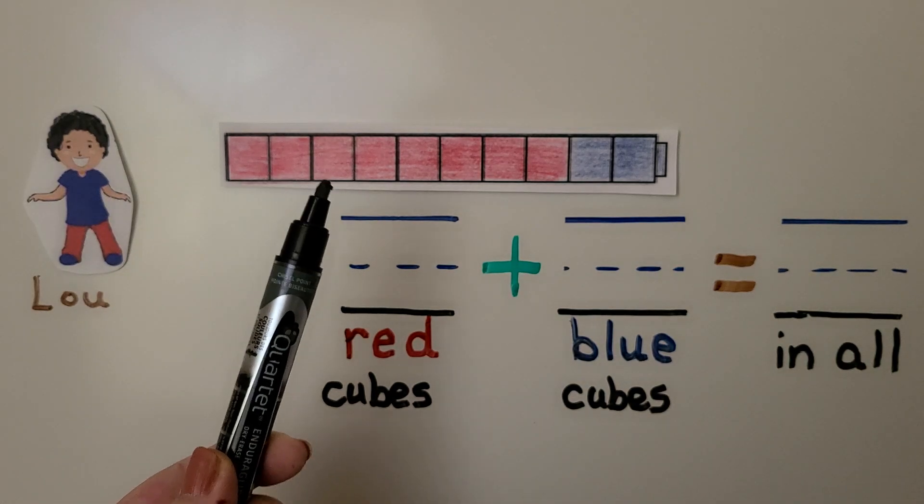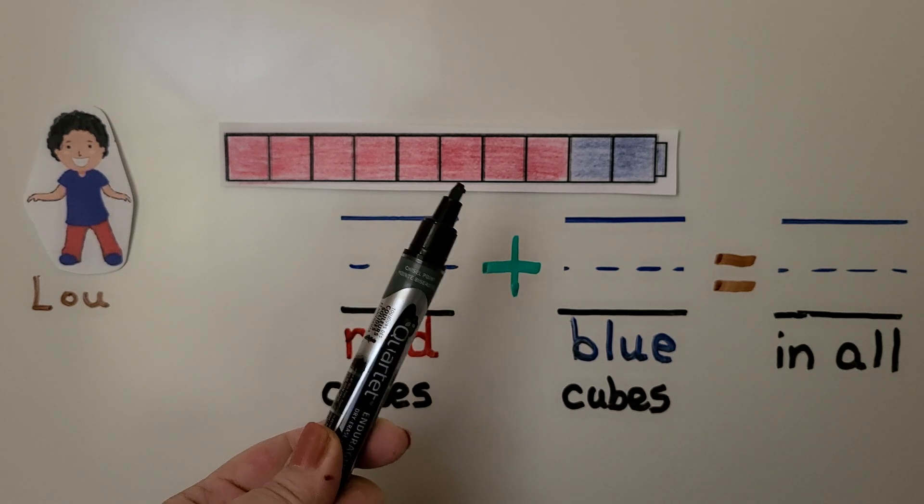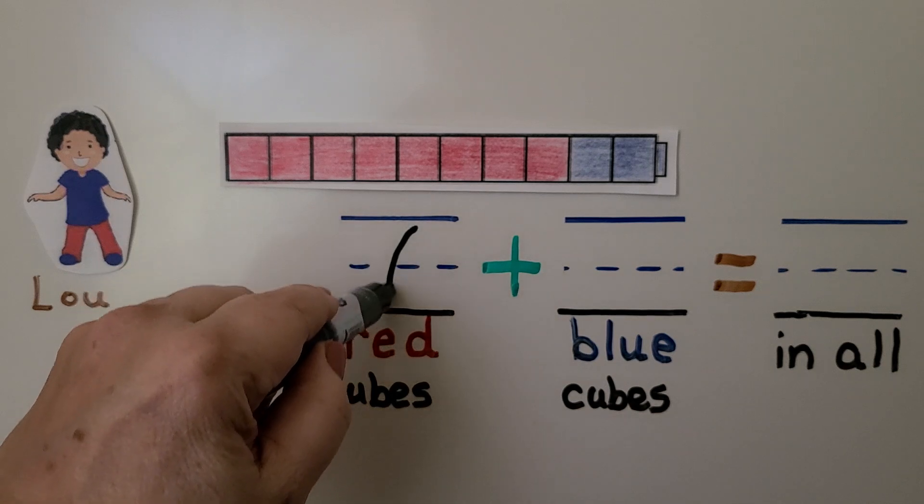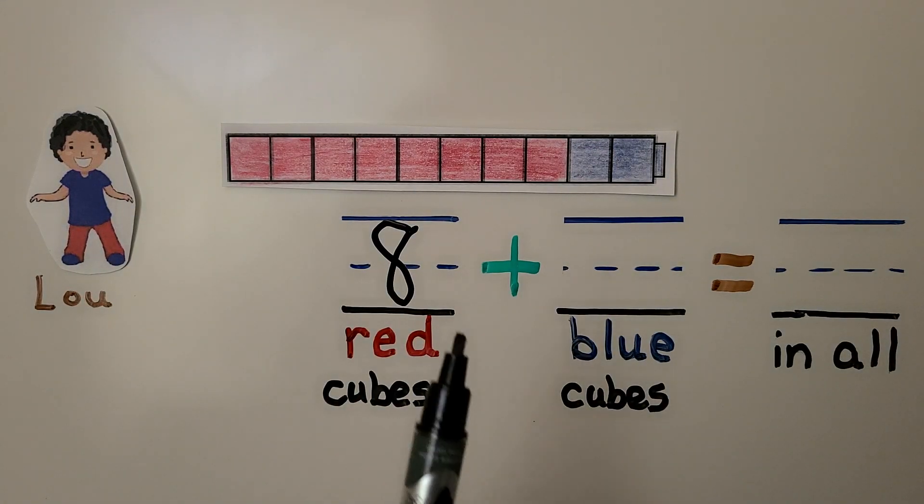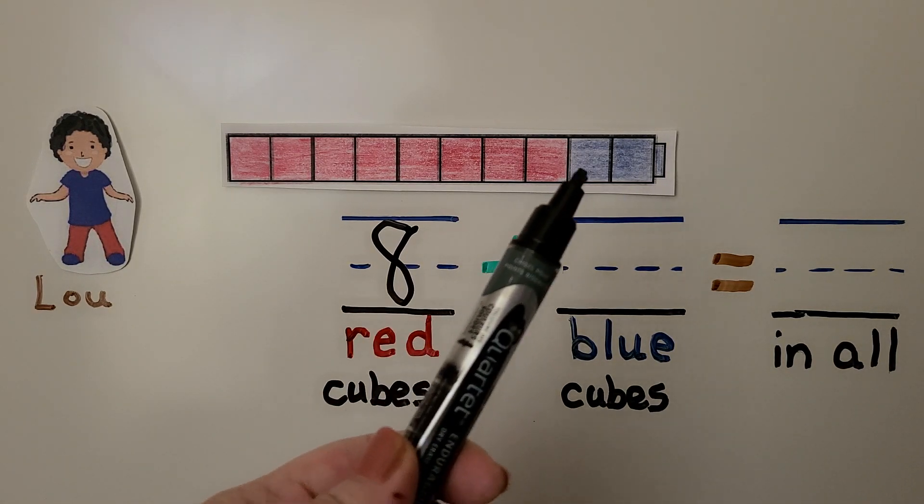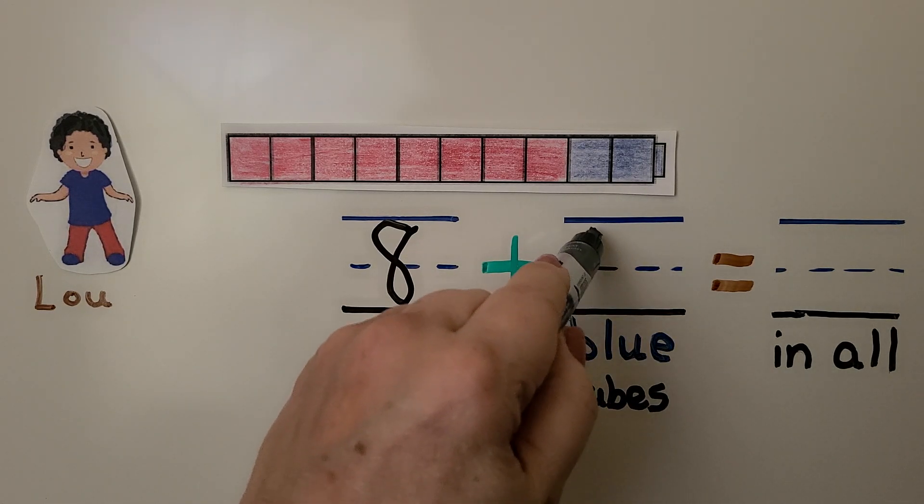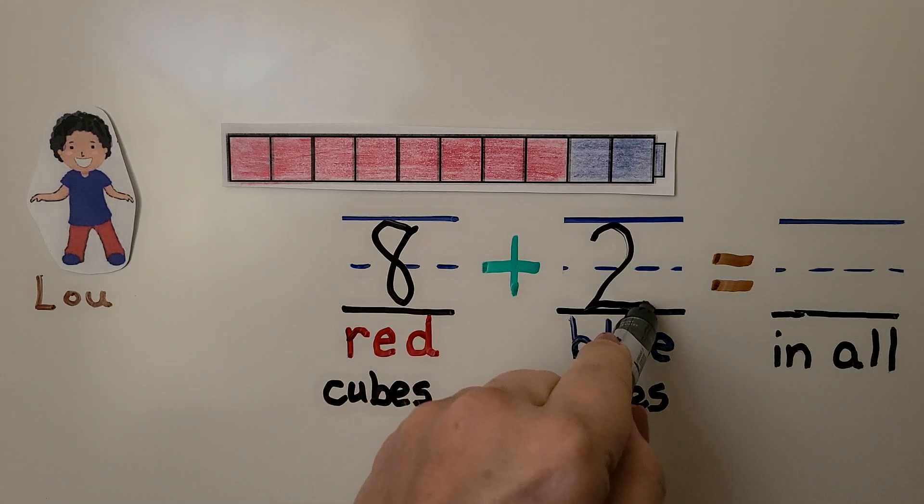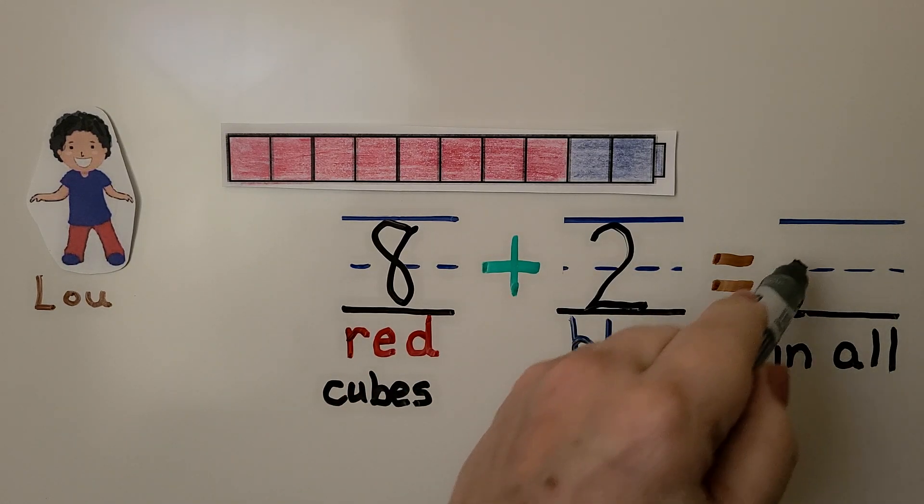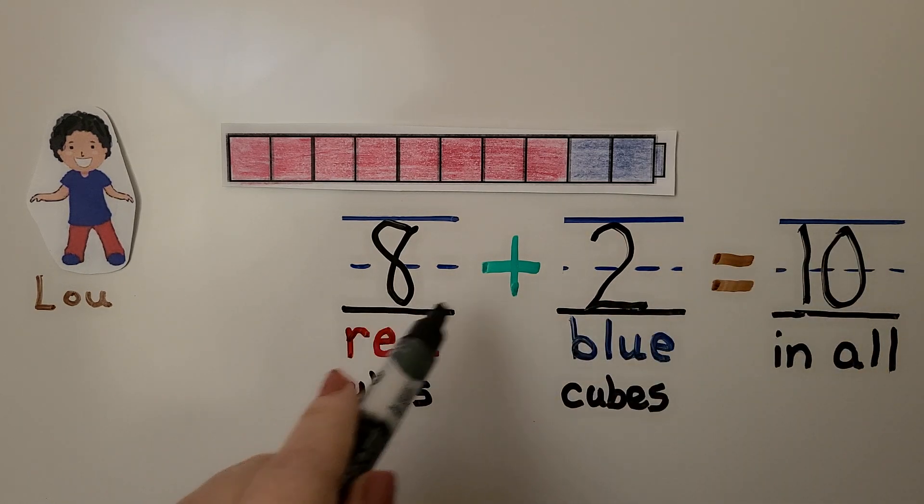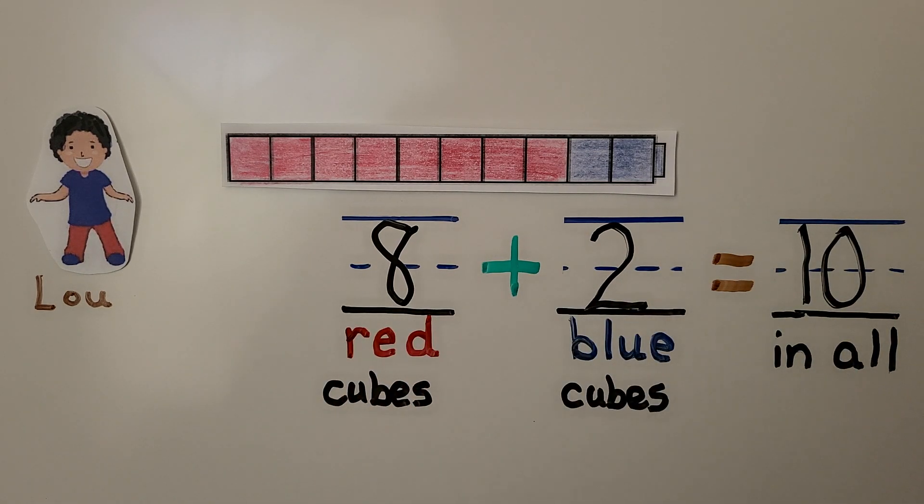It told us that there's 8 red. One, two, three, four, five, six, seven, eight. We know there's 8 red. How many more would we need from 8 to make 10? Eight, nine, ten. That's 2. Two blue cubes would give him 10 in all. Eight plus two is equal to 10.